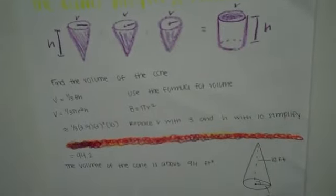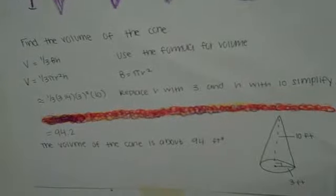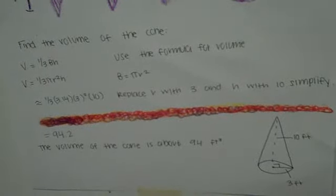To find the volume of the cone, we use the formula one-third BH. And to find the base, it's pi R squared since the base is a circle.